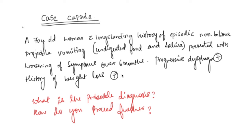Hi and welcome to Synapse, this is Dr. Sonika. Today's video is going to be on esophageal pathologies. Let us start with the case capsule, we will see the differentials and then study the esophageal pathology. Starting with the case: a 70-year-old woman with a long-standing history of episodic non-bilious projectile vomiting containing undigested food and saliva, presented with worsening of symptoms over six months. She has progressive dysphagia and history of weight loss.